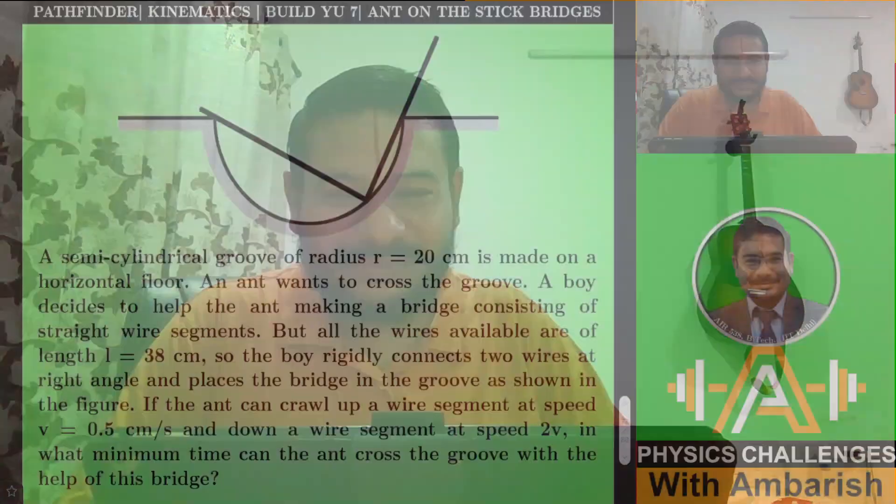Problem seven involves building a stick bridge for an ant to cross a cylindrical groove. Some of my students were facing problems because there's some twist. It's not a simple problem in normal maxima and minima in calculus, and that's why students sometimes get a wrong answer. So without much ado, let's straightaway get into the problem.